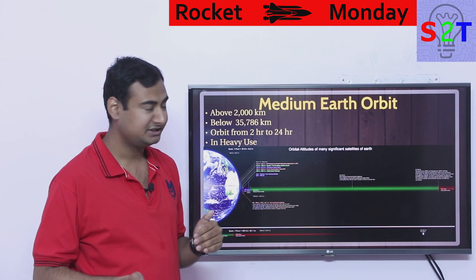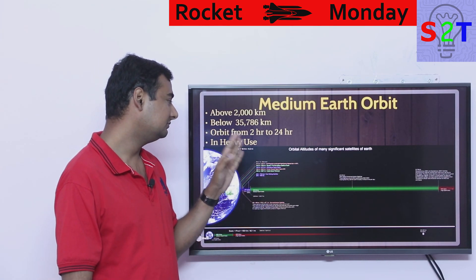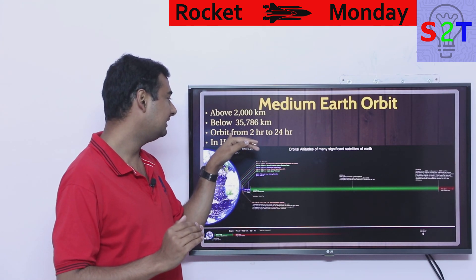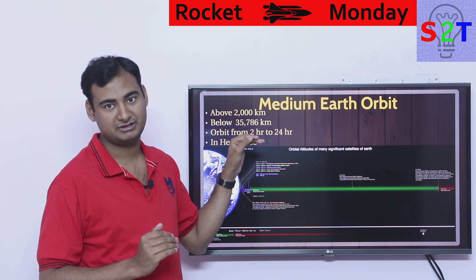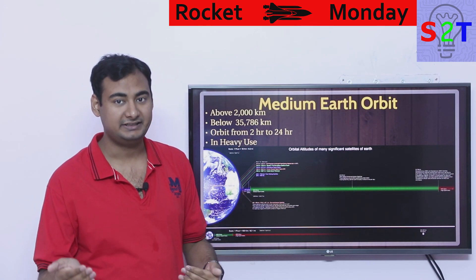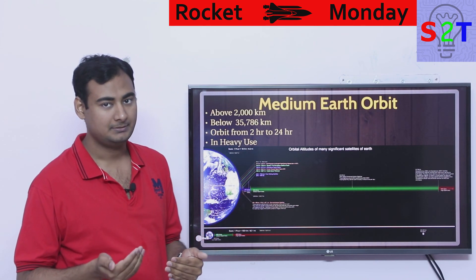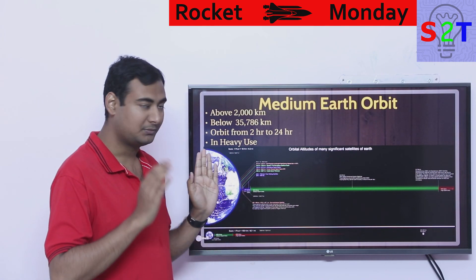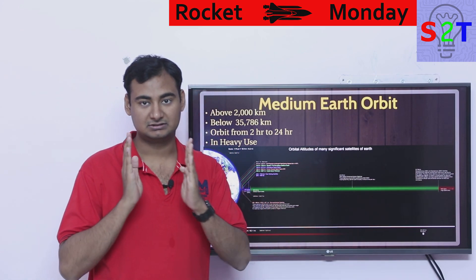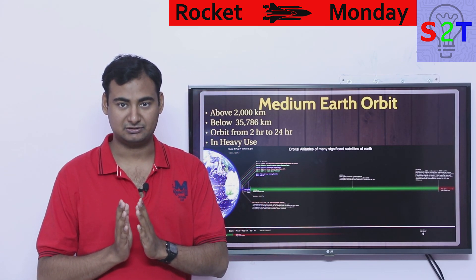If you want the mathematical data, MEO would be above 2,000 kilometers and below 35,000 kilometers. At 35,000 kilometers you would be orbiting at around 23 hours, and if you push a little further you are more or less at the geostationary band. The border here is not very absolute — in geostationary the acceptable distance is very narrow.